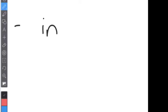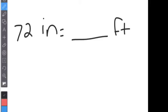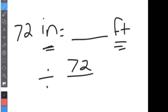Let's do one more where we have to divide. Let's try feet and inches. Say you have 72 inches and want to know how many feet that is. There are 12 inches in a foot. This time I'm going from a smaller to a bigger unit, so we divide. As a fraction: 72 over 12. Twelve goes into 72 six times, so the answer is six feet.